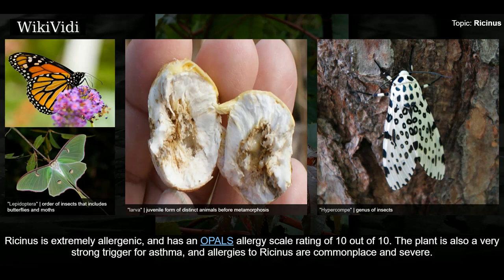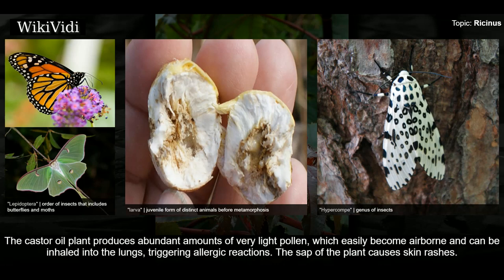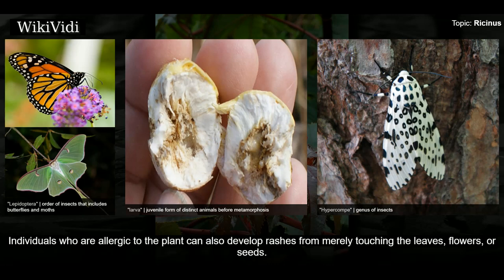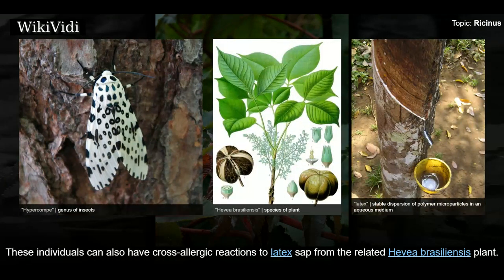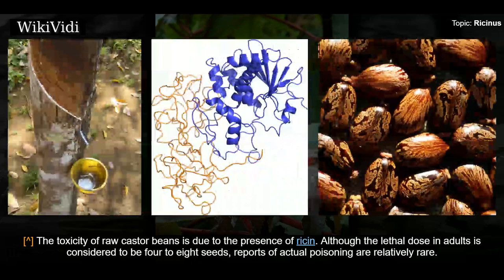Ricinus is extremely allergenic and has an OPALS allergy scale rating of 10 out of 10. The plant is also a very strong trigger for asthma, and allergies to Ricinus are commonplace and severe. The castor oil plant produces abundant amounts of very light pollen which easily becomes airborne and can be inhaled into the lungs, triggering allergic reactions. The sap of the plant causes skin rashes. Individuals who are allergic to the plant can also develop rashes from merely touching the leaves, flowers, or seeds, and can have cross-allergic reactions to latex sap from the related Hevea brasiliensis plant.